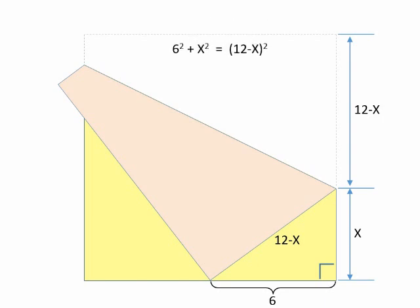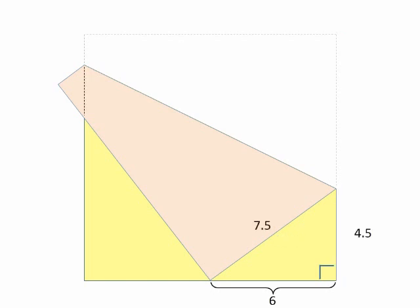Pythagoras tells us that 6 squared plus x squared is equal to 12 minus x squared. Solving for x, we find that x is equal to 4.5. Therefore, the hypotenuse is 12 minus 4.5, which is equal to 7.5. You might recall this as the old familiar 3-4-5 right triangle, scaled up by a factor of 1.5.